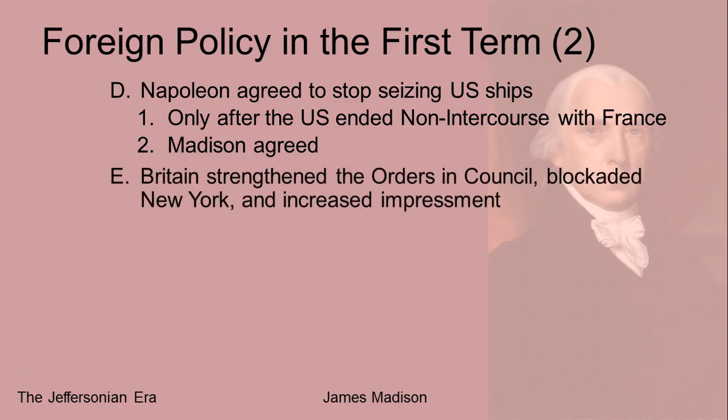Unfortunately for the U.S., the British responded by viewing this as an aggressive action — the Americans were now trading with their enemies. So they actually strengthened the orders in council allowing the British Navy to seize American ships, sent warships to enforce a blockade of New York Harbor, and also actively began increasing their actions regarding impressment — stopping U.S. ships, finding British citizens aboard, and forcing them into the British Navy. These developments and what they caused will be discussed later on in class.